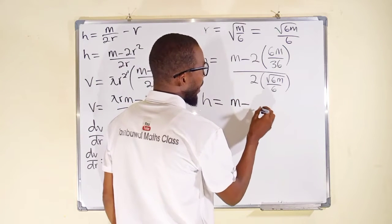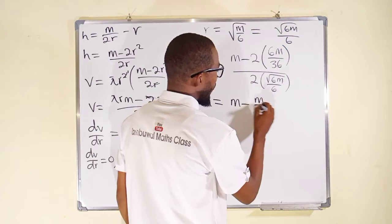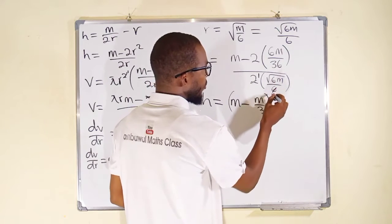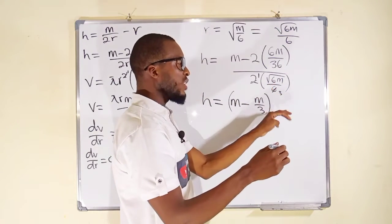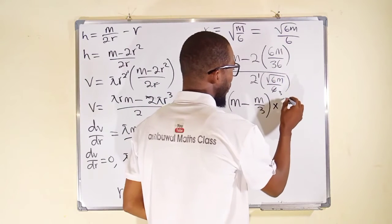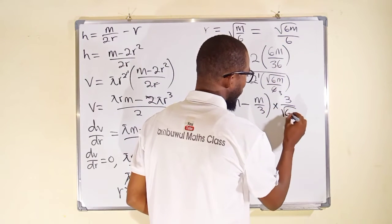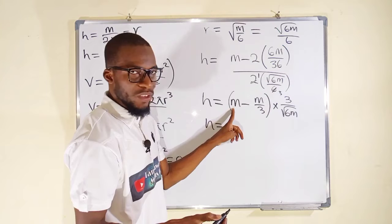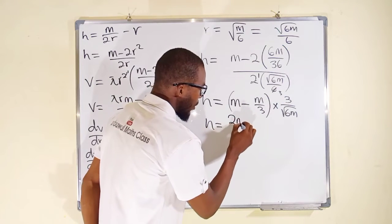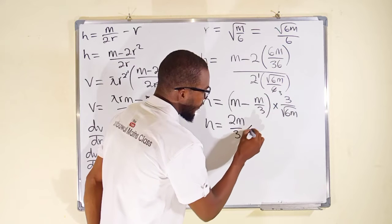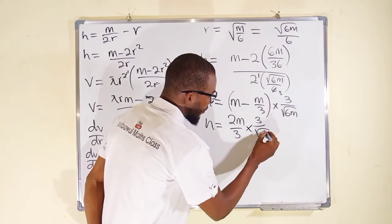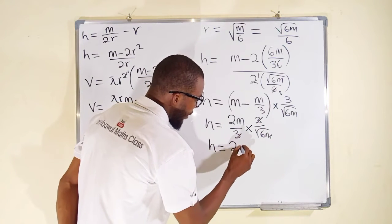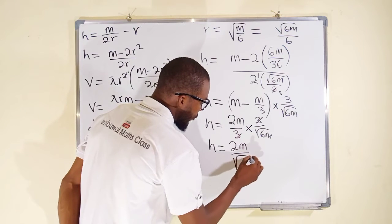So h equals (M minus M over 3), and to divide by (root(6M) over 3), we multiply by the reciprocal: 3 over root(6M). This gives h equals 3 times (2M over 3) over root(6M). The 3's cancel, and finally h equals 2M over root(6M).